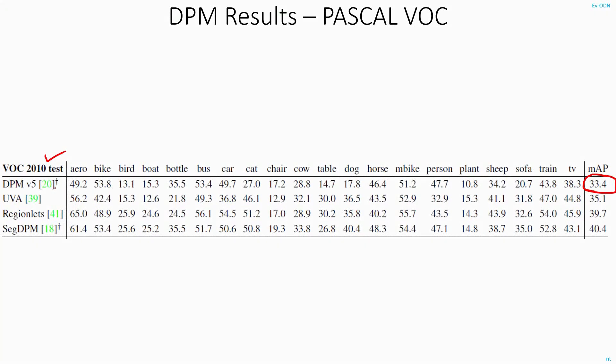And afterwards, there was some variation of DPM that was presented called Z-DPM, which managed to get up to 40% accuracy.